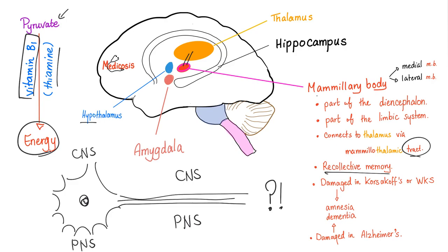Recollective memory. This mammillary body is responsible for memory. That's why when this mammillary body is damaged in Korsakoff syndrome or in Wernicke-Korsakoff syndrome, you get amnesia. And that's why when the mammillary body is damaged in Alzheimer's disease, you get dementia. Both of which are problems with your memory.